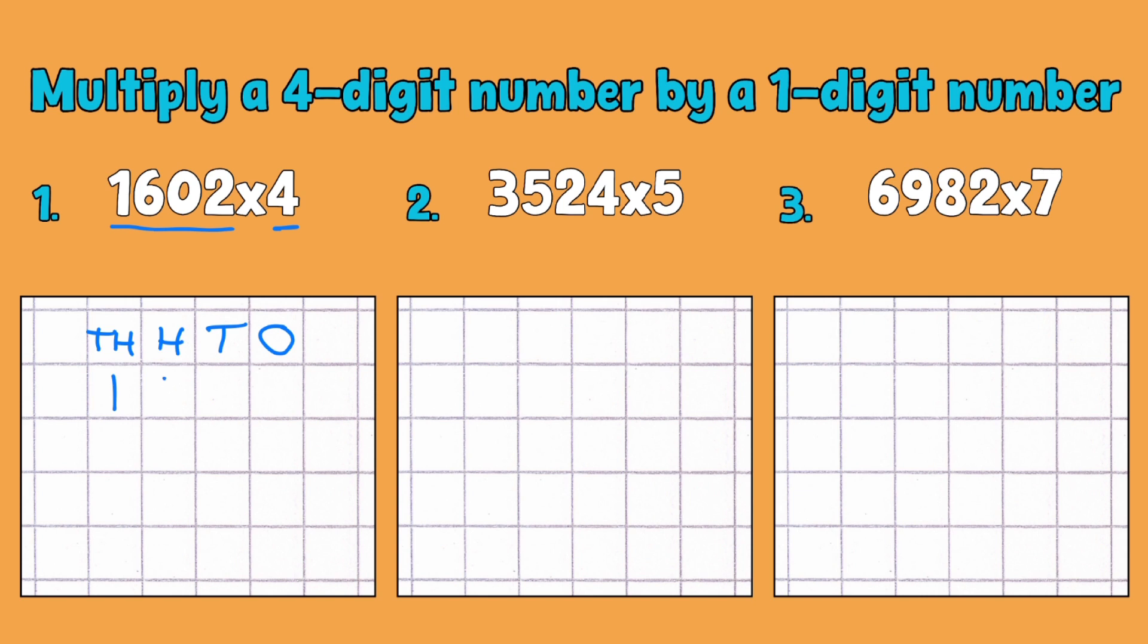And then I'm going to write in my number that I'm going to be multiplying, and then the number that I'm multiplying by. We'll need our answer sign just at the bottom there. So I'm going to go from the ones digit, multiplying each one by 4 as we go along, and then write my answer in the answer place at the bottom.